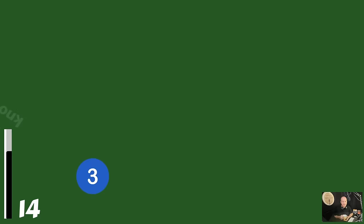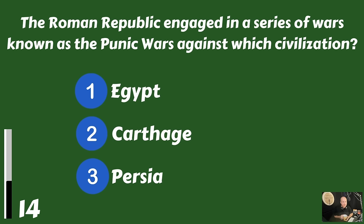The Roman Republic engaged in a series of wars known as the Punic Wars against which civilization? The Egyptian civilization, Carthage, or the Persian civilization? They fought against Carthage.